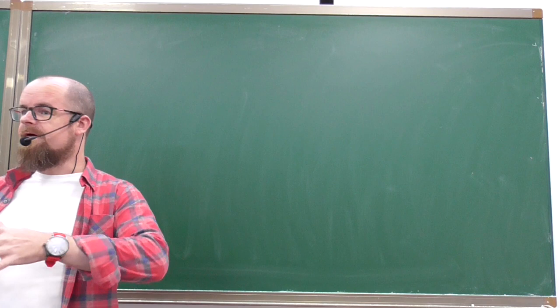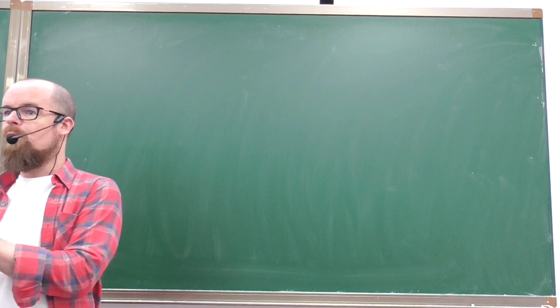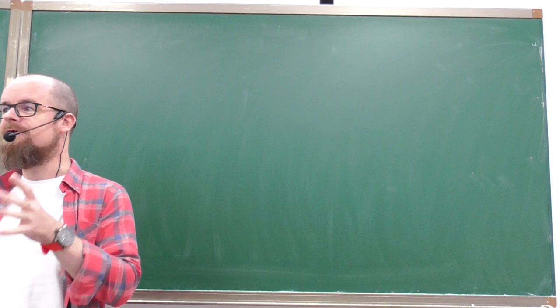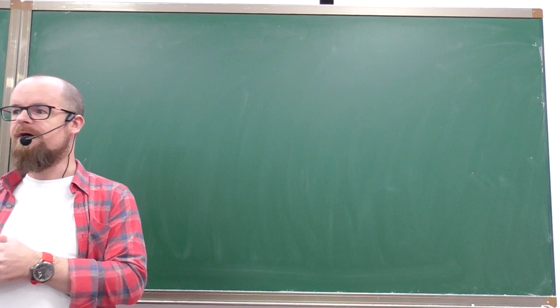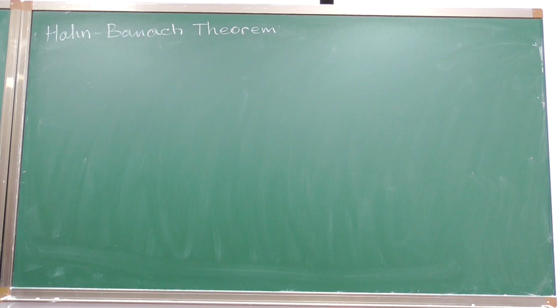We continue our study of linear functionals and linear operators. Today we prove one of the most important results in this course — one of the three working horses of functional analysis. These are so useful and powerful that plenty of other results are proved based on them. Today we will cover one of them, which is called the Hahn-Banach theorem. Let me state the theorem first, then discuss the auxiliary results needed for the proof.